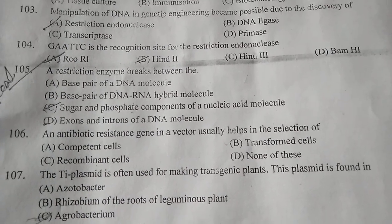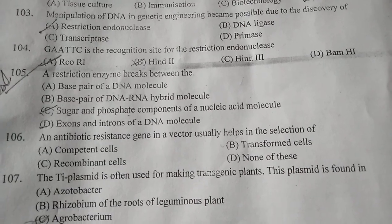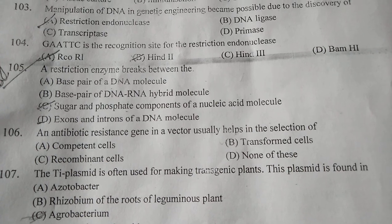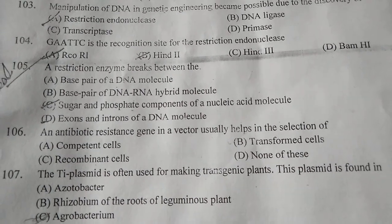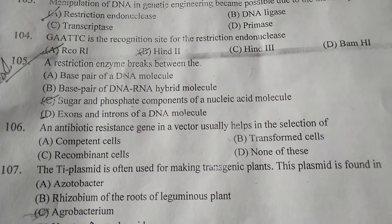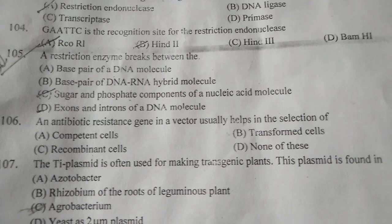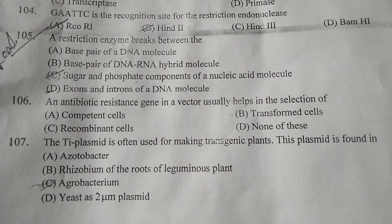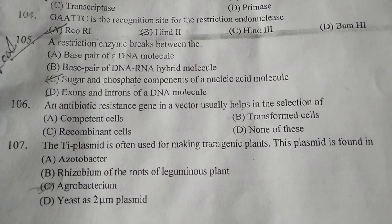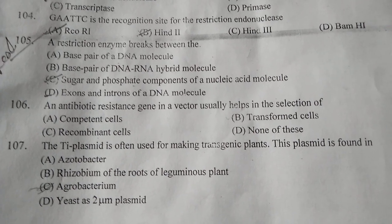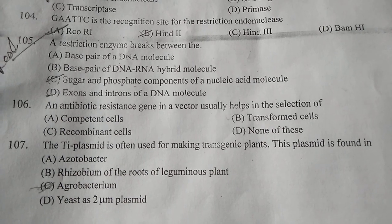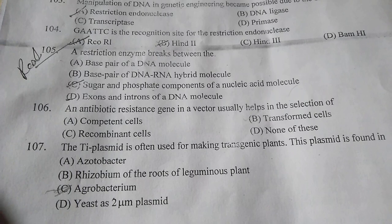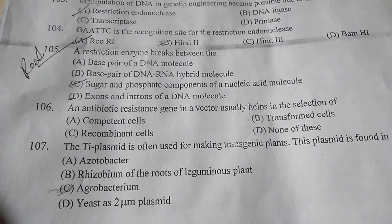Question number 106: Antibiotic resistance gene in a vector usually helps in the selection of — the correct answer is B — transformed cells. Question number 107: The Ti plasmid is often used for making transgenic plants. This plasmid is found in — C is the correct answer — Agrobacterium.